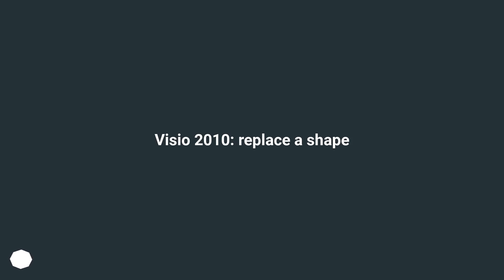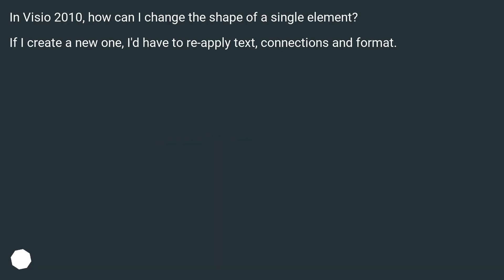Visio 2010: Replace a Shape. In Visio 2010, how can I change the shape of a single element? If I create a new one, I'd have to reapply text, connections, and format.